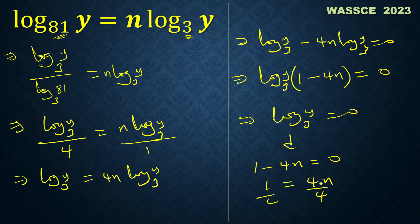So my n is 1 over 4. That's the answer. So the answer here is 1 over 4. Thanks for watching.